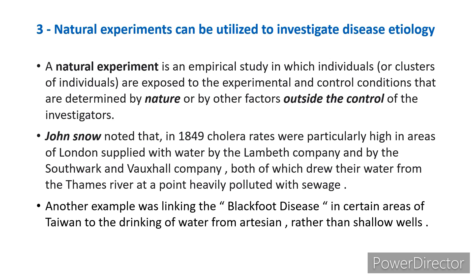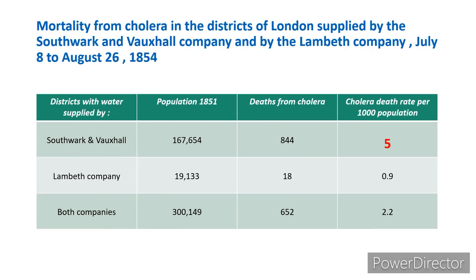The table explains the mortality from cholera in the districts of London supplied by Southwark and Vauxhall Company and by the Lambeth Company from July 8th to August 26th, 1854. The cholera death rates per thousand population were calculated. For Southwark and Vauxhall, deaths from cholera were 844, divided by the population supplied of approximately 167,654, multiplied by 1000, giving a value of around 5. It is clearly evident that the cholera death rate per thousand population is much higher in Southwark and Vauxhall compared to Lambeth, which is around 0.9.